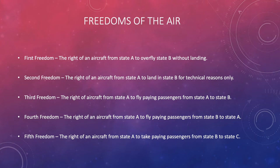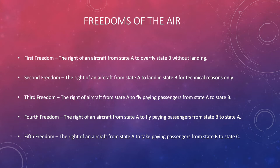The third freedom is the right of an aircraft from State A to fly paying passengers from State A to State B — the right to fly from one country to another without any penalties. The fourth freedom is basically the reverse of the third: the right of an aircraft from State A — for instance a UK-registered aircraft — to fly from State B back to State A. This gives us the right to fly to and from different countries without any penalties or conflict. The fifth freedom is the right of an aircraft from State A — imagine the UK — to take paying passengers from State B to State C. Even as a UK-registered aircraft, you have the freedom to fly from one foreign country to another.